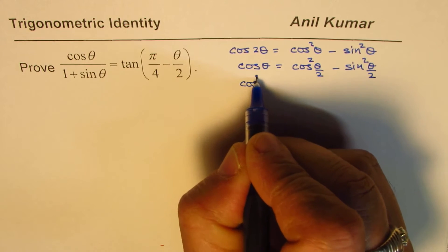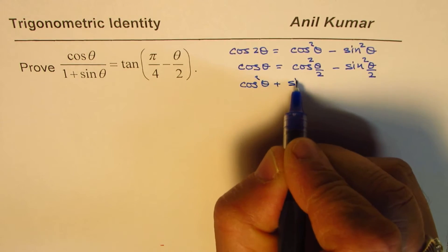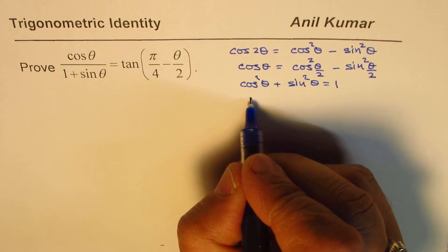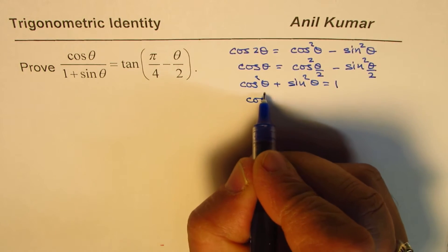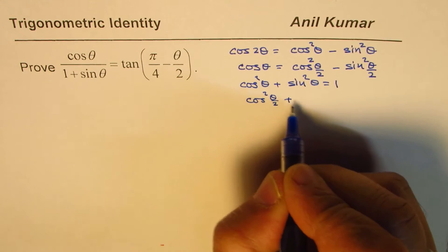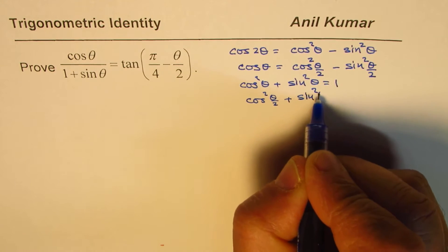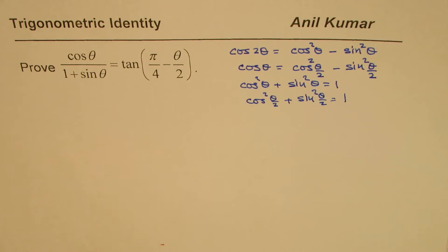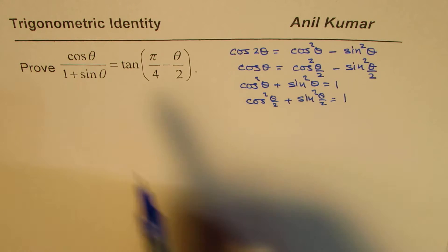Similarly, we know that cos²θ plus sin²θ equals 1, which can also be written as cos²(θ/2) plus sin²(θ/2) equals 1. All the formulas valid for θ are valid for θ/2 as well — that's the basic idea.